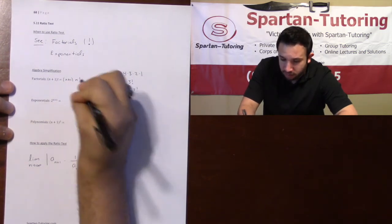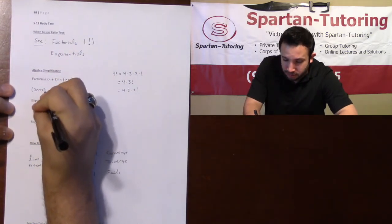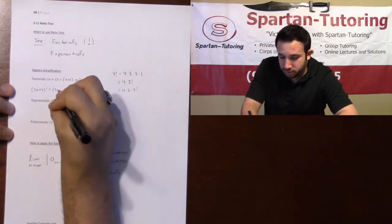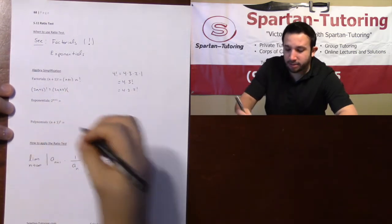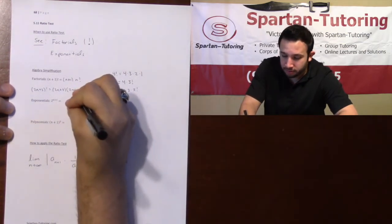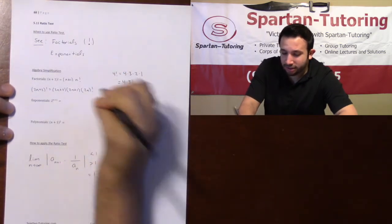So if you have n plus 1 factorial, I can pull out that n plus 1 and the previous term would be n factorial. Hypothetically too, if I had something like say 2n plus 2 factorial, what I can do is I can pull that term out: 2n plus 2 times, and the next term is going to be one less than that, 2n plus 1 times.